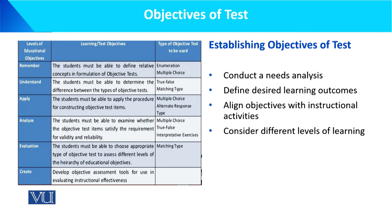A picture shows the levels of educational objectives: Remember, Understanding, Apply, Analyze, Evaluation, and Create — based on Bloom's Taxonomy. According to these levels, test objectives and types should be selected. For example, at the 'Remember' level, the student must be able to define relevant concepts in formulation of the objective test. Such a test would use enumeration or multiple choice questions.